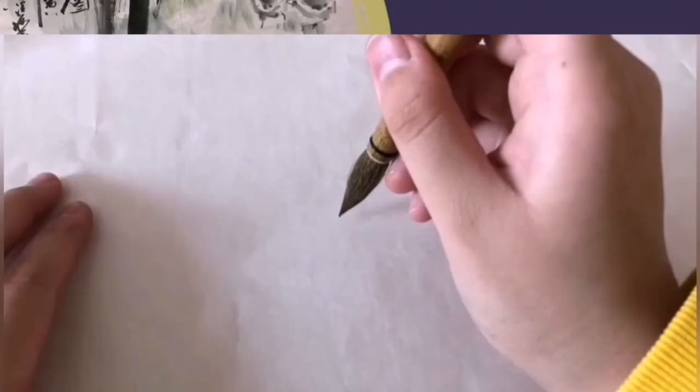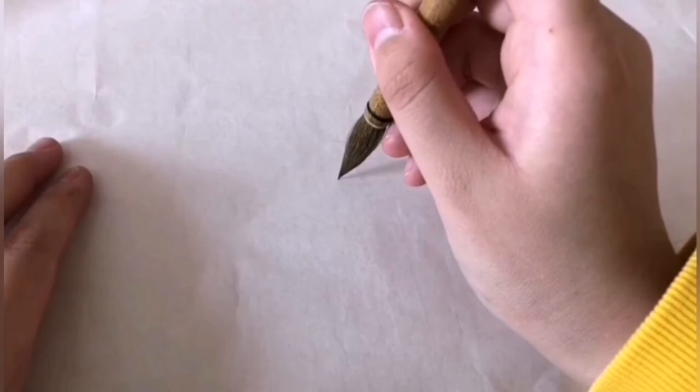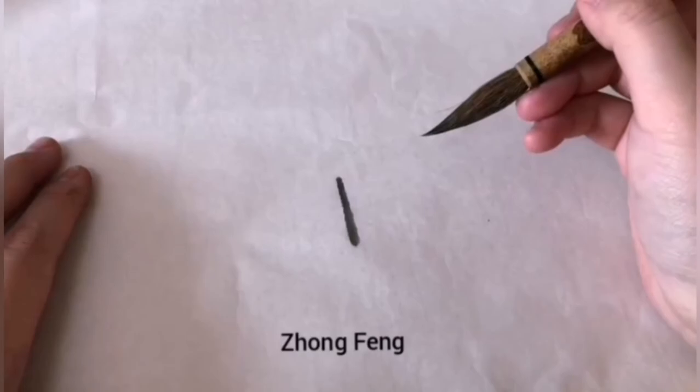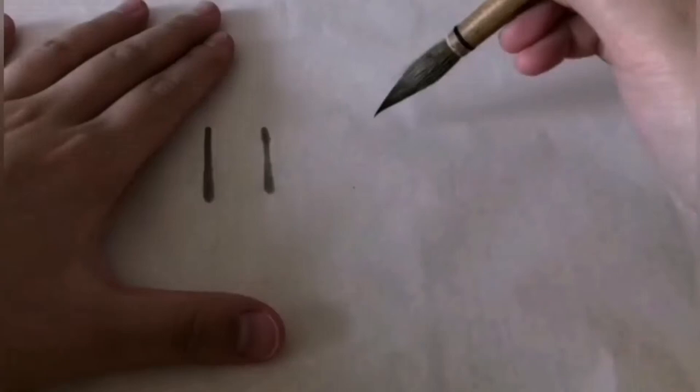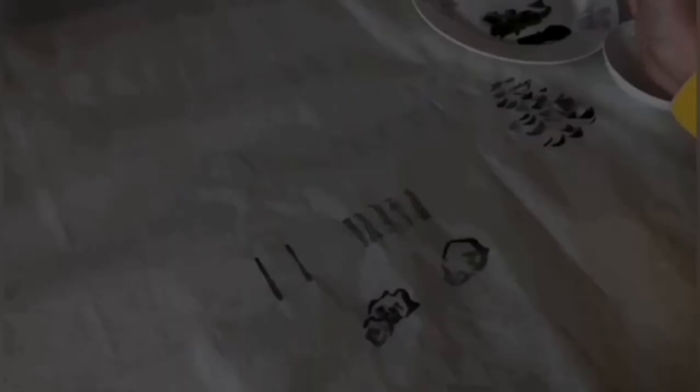Two kinds of brush behaviors are commonly used. Zhongfen is using the central tip of the brush to create a straight and clear line. On the other hand, cefen is using the side of the brush to create a more texture-like line.